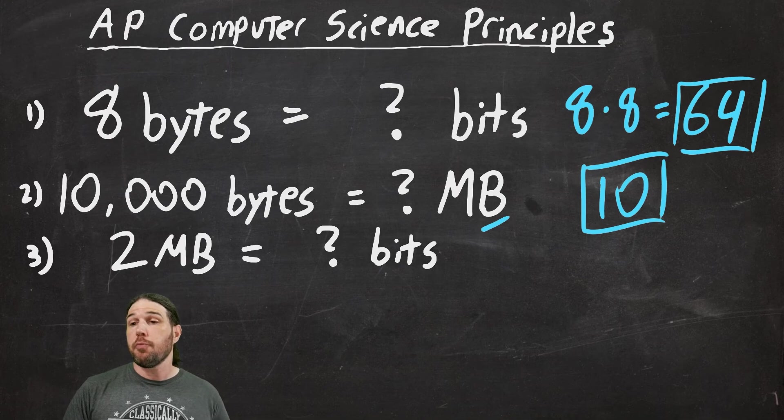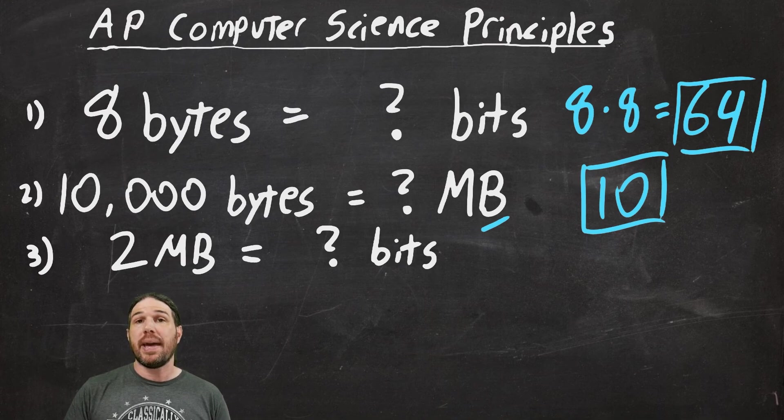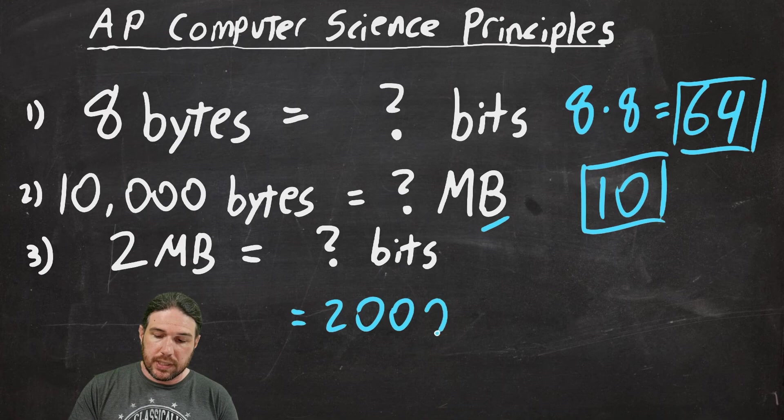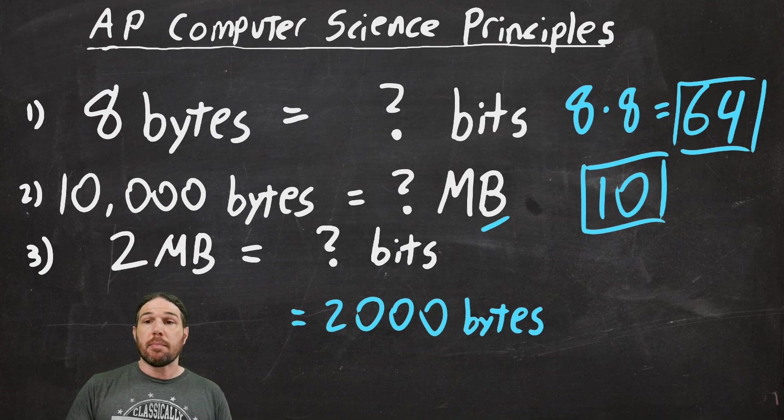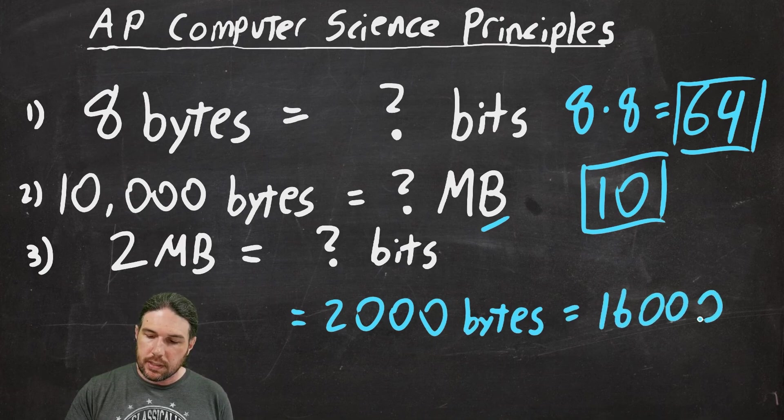Finally, we have two megabytes equals how many bits? Well, we're going to take a little bit of a detour here. We know that two megabytes is the same thing as two thousand bytes. And since each byte is eight bits, we multiply by eight and we get sixteen thousand bits.